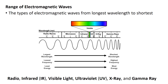So it goes: radio, microwave, infrared, then visible light, then ultraviolet light, then X-ray, and finally gamma rays. In gamma rays, you have the shortest wavelength, highest frequency, and most energy. So let's go through these individually and look at some examples.